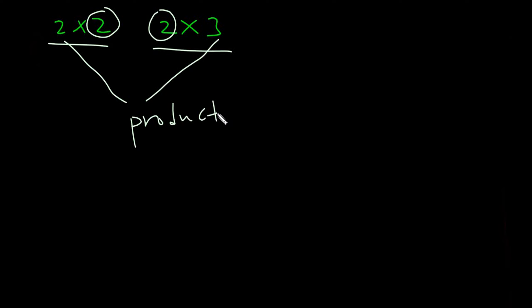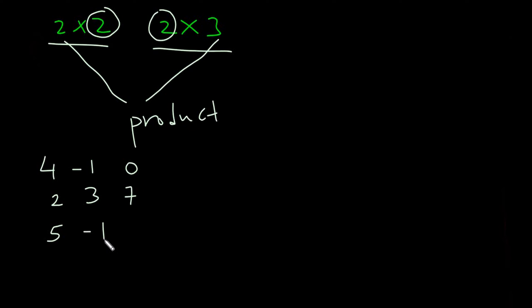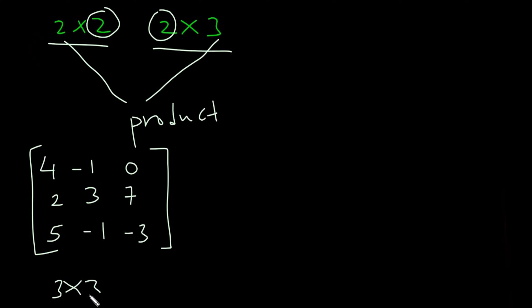So let me this time round use a three-by-three matrix. So let's say we have a matrix: 4, negative 1, 0, 2, 3, 7, 5, negative 1, and negative 3. So that's a 3-by-3 matrix.